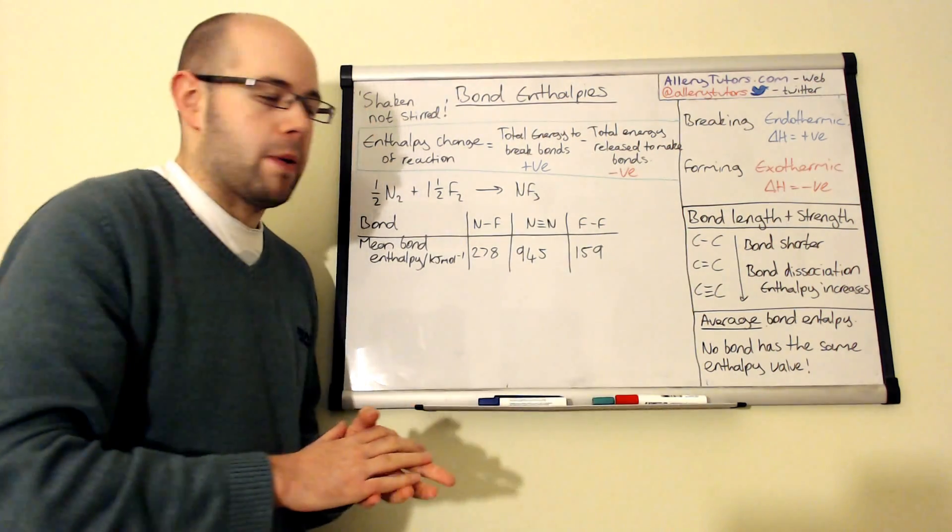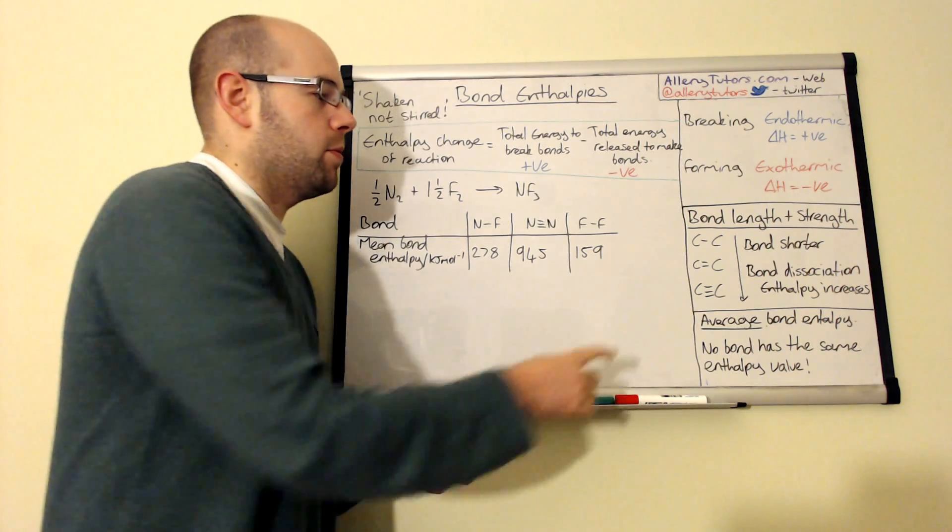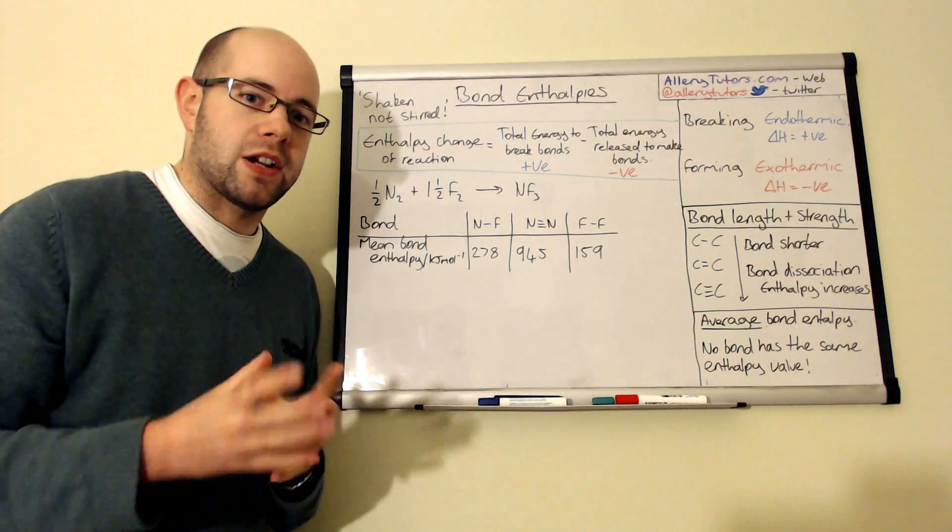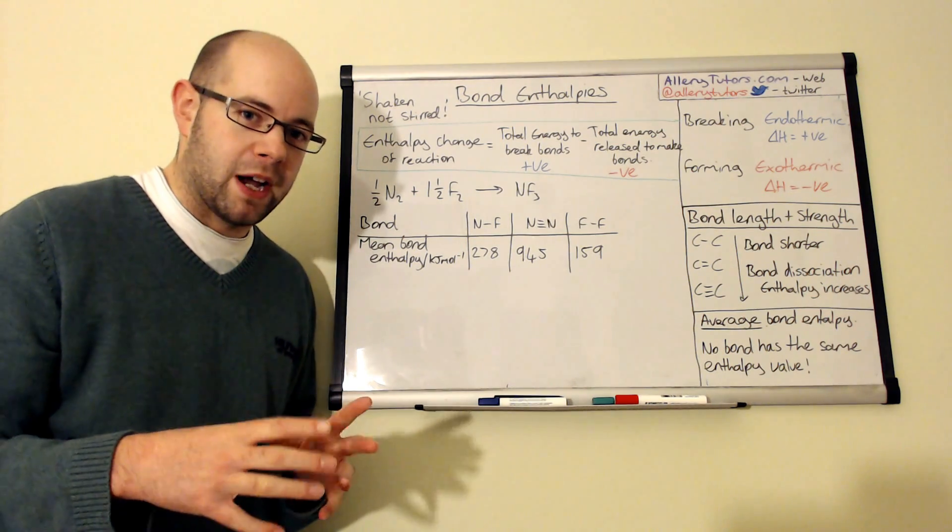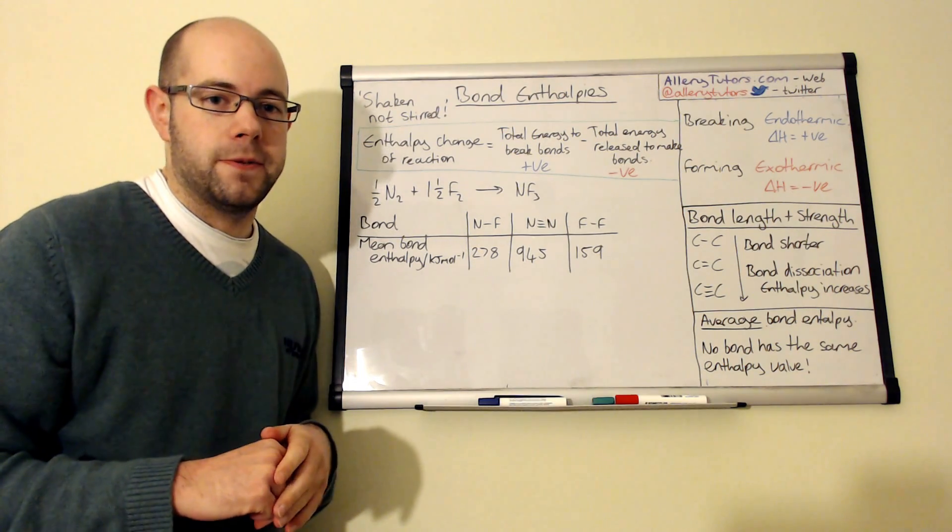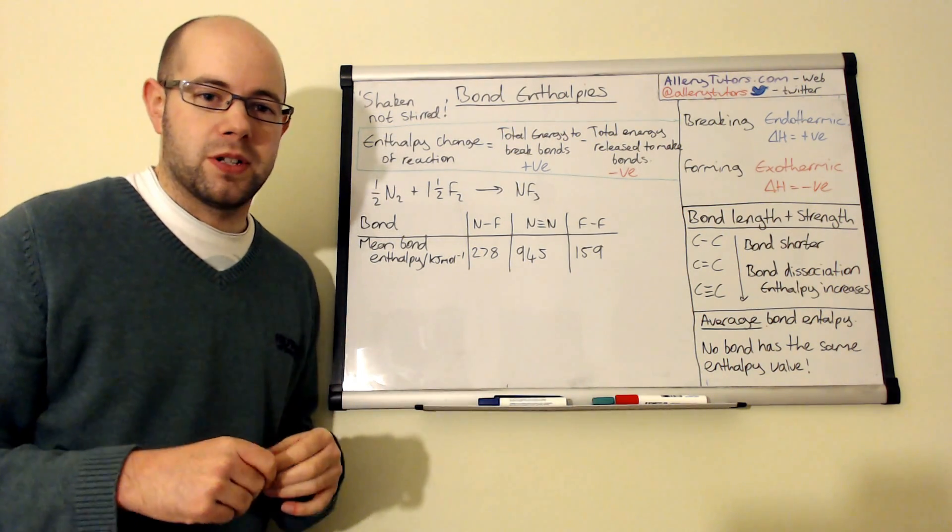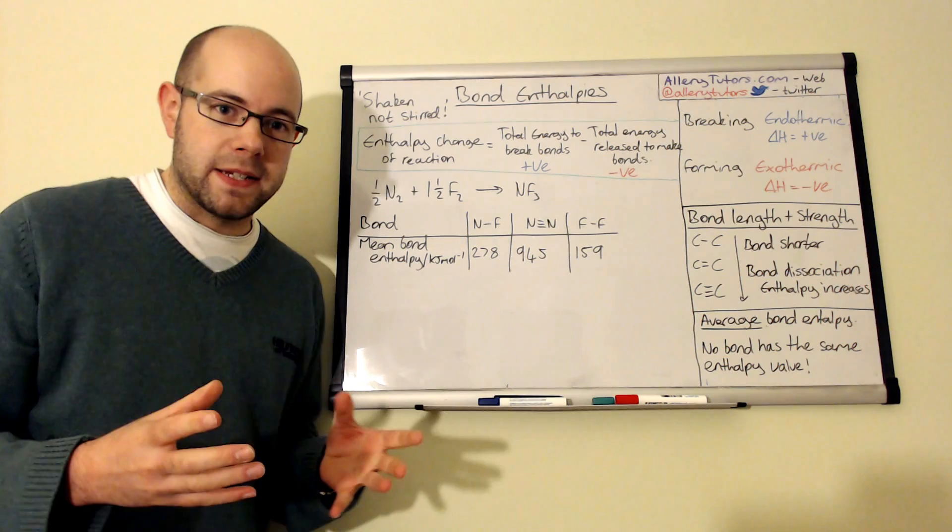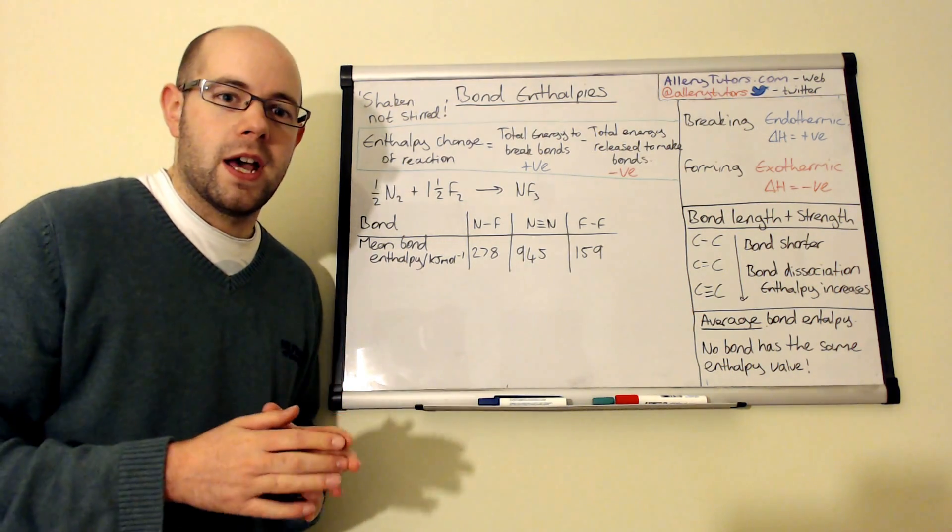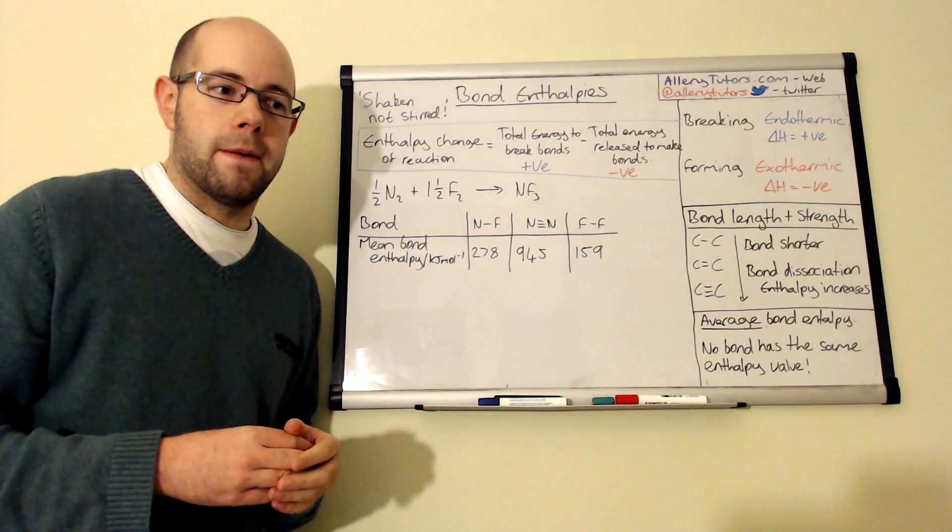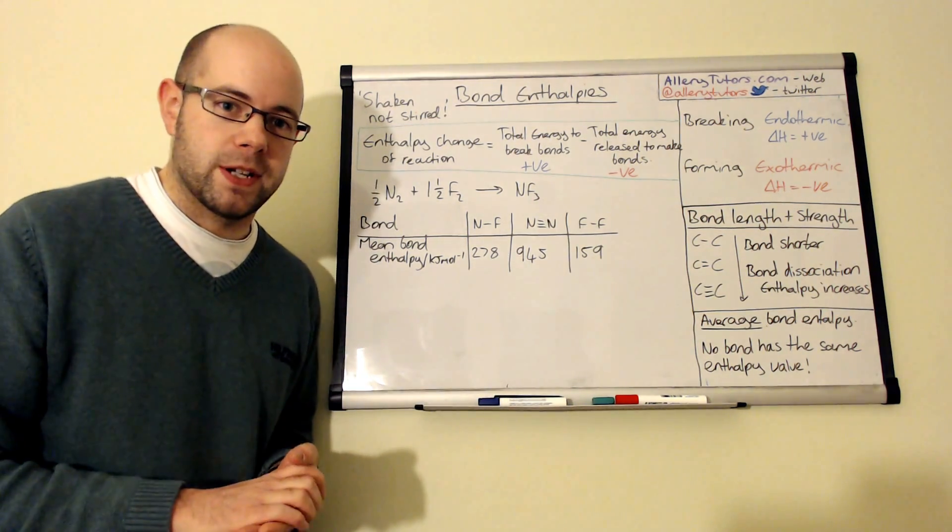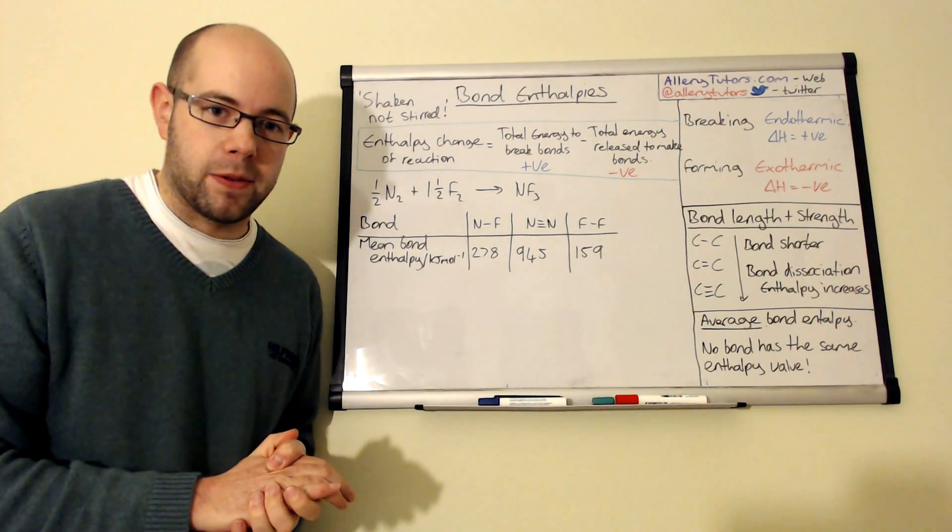Now when we're talking about energy, we're actually talking about what we call an average bond enthalpy, and no bond is actually the same value. So for example, you might have a carbon-carbon bond in ethane and compare that to a carbon-carbon bond in say something like benzene, and the value of them two, even though they're both single bonds, can actually be different. The reason why is because they're in different environments and obviously have different effects on the bond enthalpy.